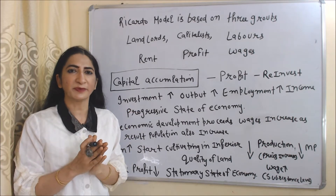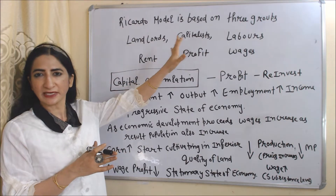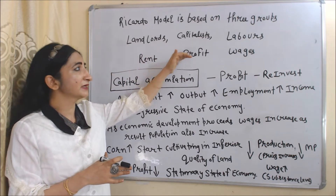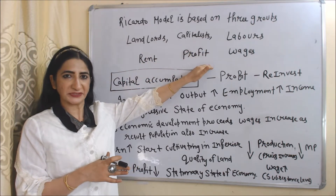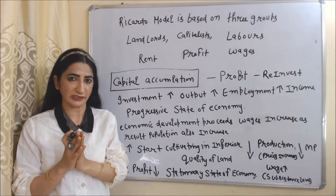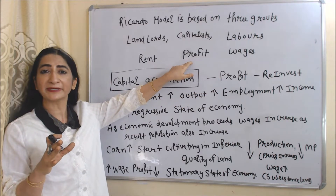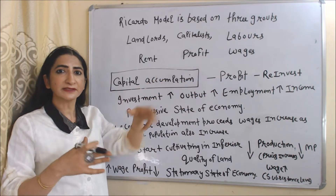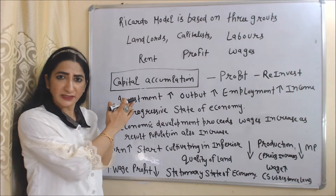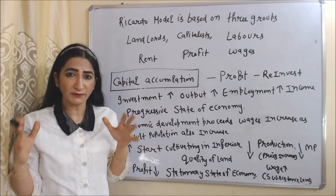Ricardo's model is based on three groups: landlords, capitalists, and laborers. Landlords receive rent, capitalists receive profit, and laborers receive wages. Capital accumulation is very important for this theory, and capital accumulation depends on profit earned by capitalists, because capitalists reinvest this profit. As a result, investment increases in the economy. As investment increases, output, employment, and income will also increase.